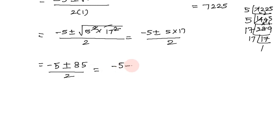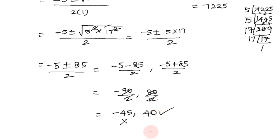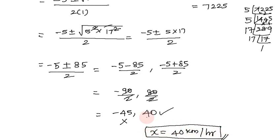Taking the positive root: x equals minus 5 plus 85 divided by 2 equals 80 divided by 2 equals 40. The negative root gives minus 90 divided by 2 equals minus 45, which is rejected. Therefore x equals 40 km per hour. This is the original speed of the train. If speed is increased by 5 km per hour, the journey time decreases by 1 hour.